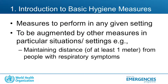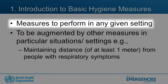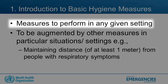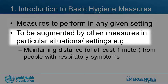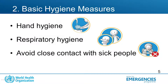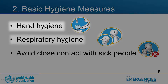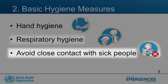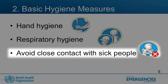For an introduction to basic hygiene measures — what are these? These are measures that should be put in place and performed in any given setting, and they should be augmented with other measures in particular settings, such as maintaining a distance of at least one meter from people with any respiratory symptoms. Basic hygiene measures include hand hygiene, respiratory hygiene, and avoiding close contact with sick people.